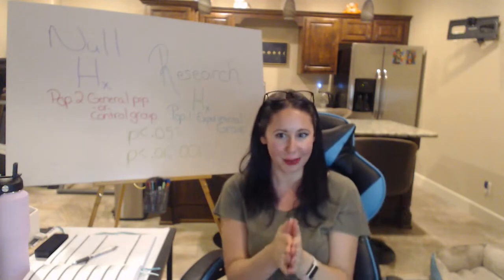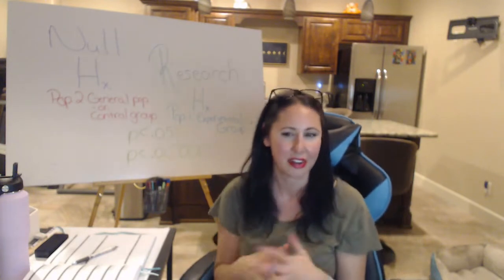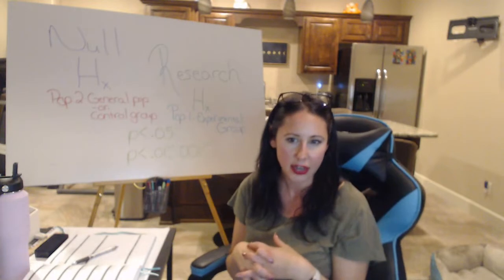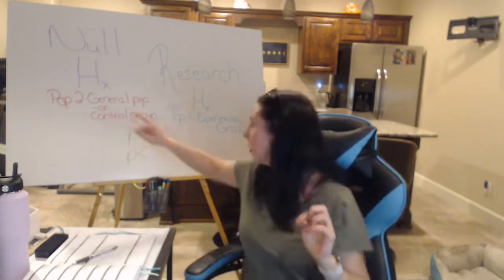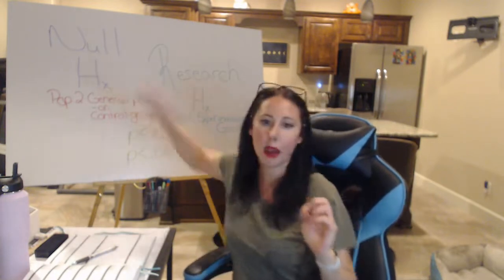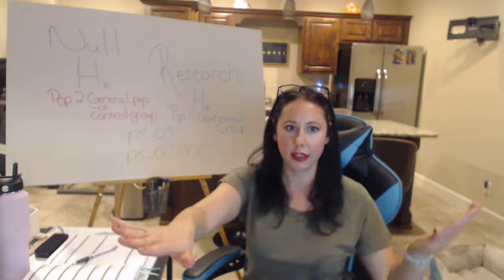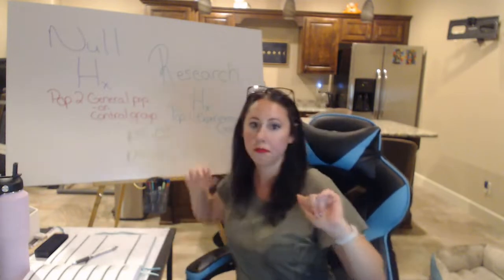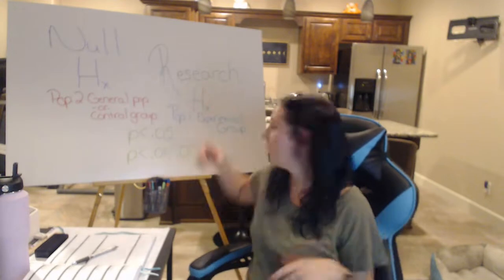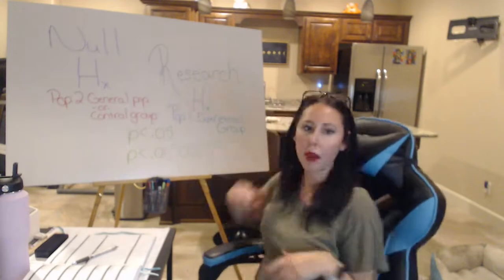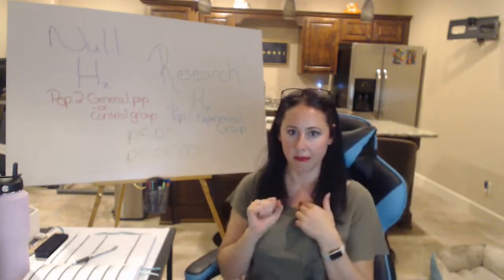Your textbook does explain that part clearly — it's just the introduction to the logic behind this that I wanted to revisit. One more time: null hypothesis — nothing is affecting anything, control group is the group that's not getting anything. Research hypothesis — the thing that I'm doing is affecting something.